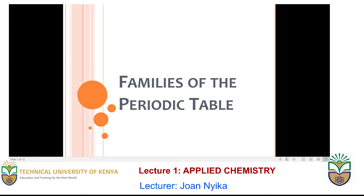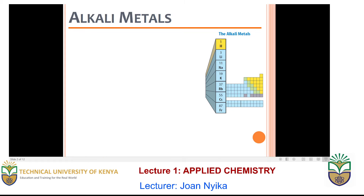Hello learners. As I had mentioned in the previous class, today we will look at some of the families that are found in the periodic table and their unique aspects that make them part of various groups. The first group are what we refer to as the alkali metals.